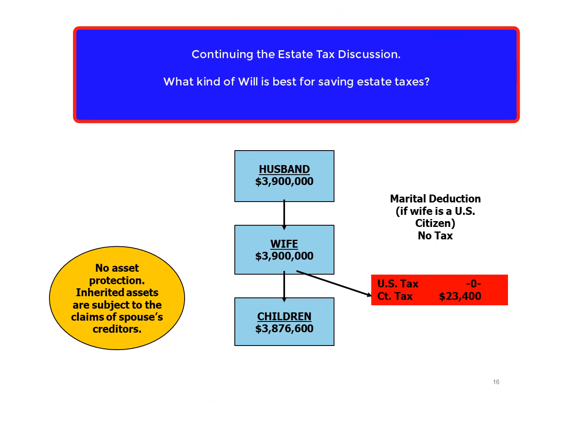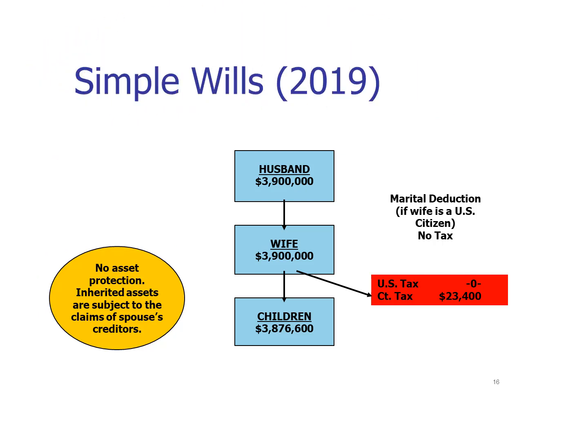Let's start with some common will scenarios and look at a simple husband and wife situation. This slide depicts a simple will that would apply after 2018. In this case, the husband has an estate of three million nine hundred thousand dollars and his will does a simple thing: it gives everything to his wife. After his death she'll receive everything, her estate will be $3.9 million, and then after her death the children will receive everything.